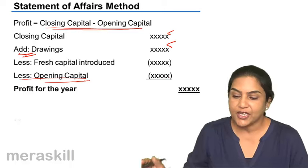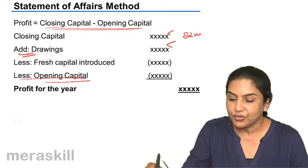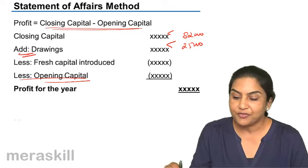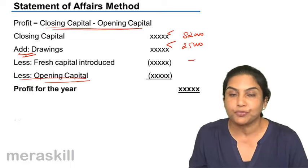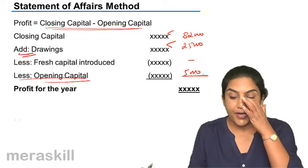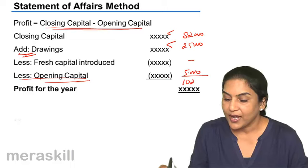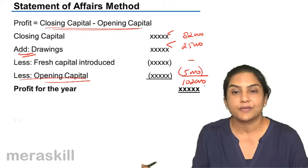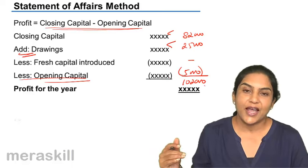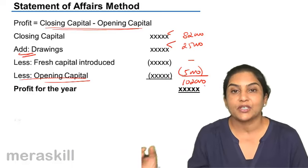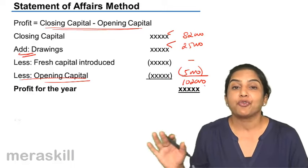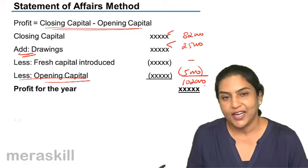In Santosh's case, he had a closing capital of 82,000, drawings of 25,000, fresh capital introduced was nil, and an opening capital of 5,000. We concluded that his profit was 1,02,000. Therefore, closing capital minus opening capital equals profit for the year if there are no drawings and no further capital has been introduced.